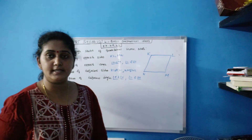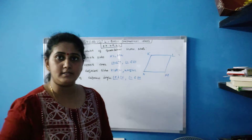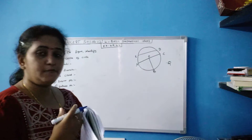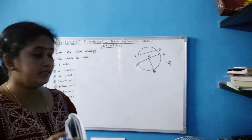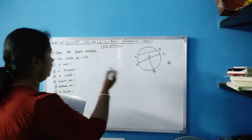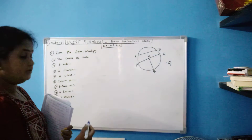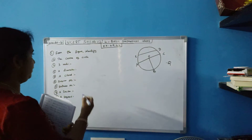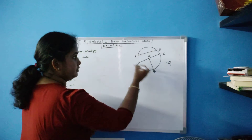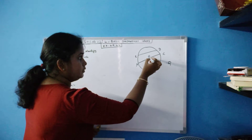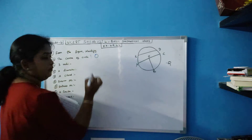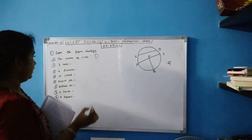Now let's move on to exercise 4.6. From the figure given, you have to identify the following. First, the center of the circle — the center of the circle is point O.